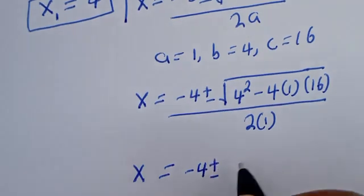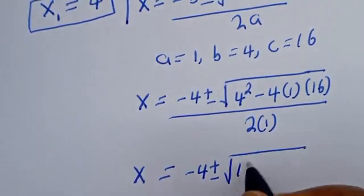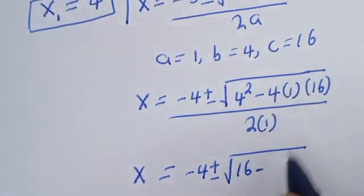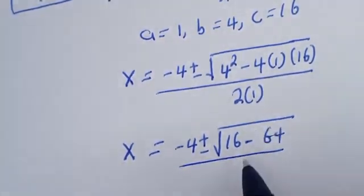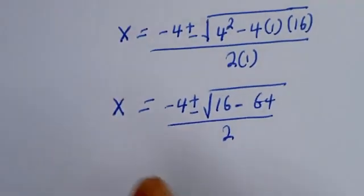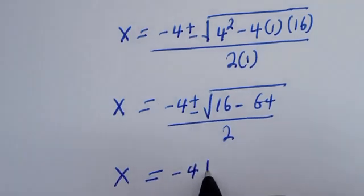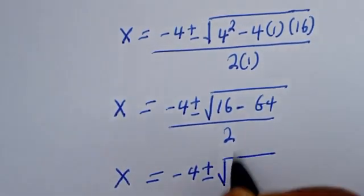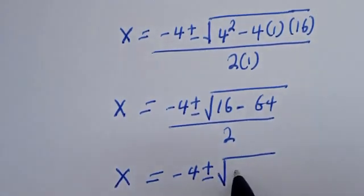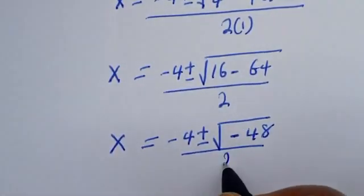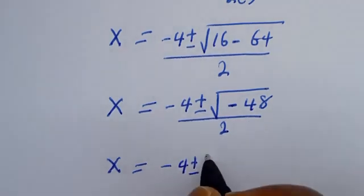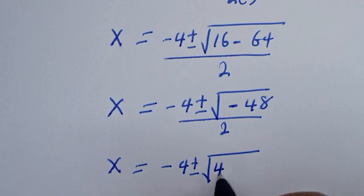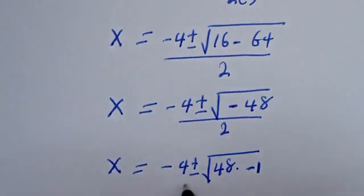Substituting: s equals minus 4 plus or minus square root of 4² minus 4 times 1 times 16, all over 2 times 1. That gives s equals minus 4 plus or minus square root of 16 minus 64, over 2, which is square root of negative 48 over 2.